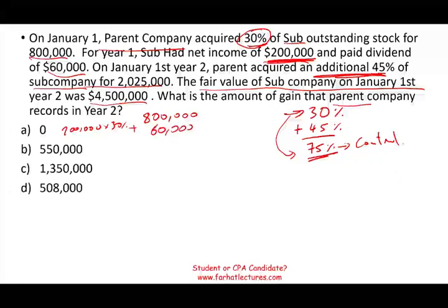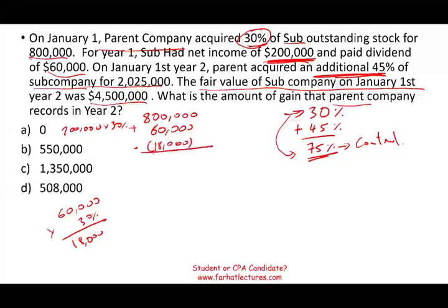Then the subsidiary paid $60,000 in dividends. We're going to receive 30% of that, which is $18,000. We're going to reduce our investment by $18,000. So by the end of year one, our investment balance is $842,000. They could ask you: what's the value of your investment at the end of year one? This is the balance at the end of year one.